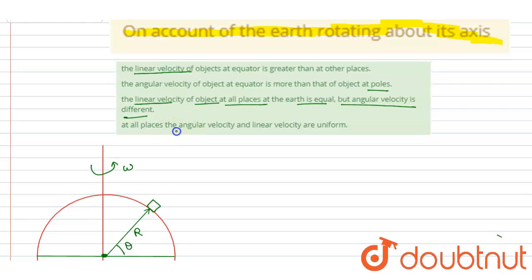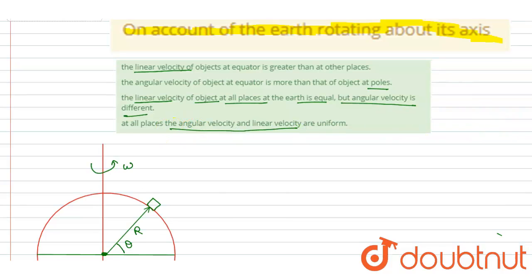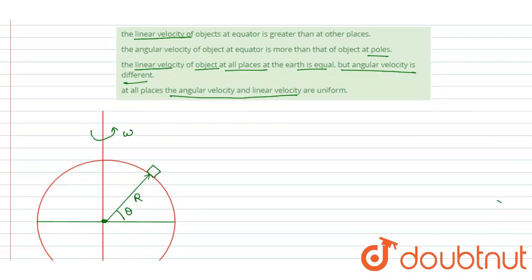If I talk about angular velocity, it is the same for all points on Earth. So the second option — that angular velocity at the equator is more than at the pole — is incorrect. Angular velocity is the same for all points.